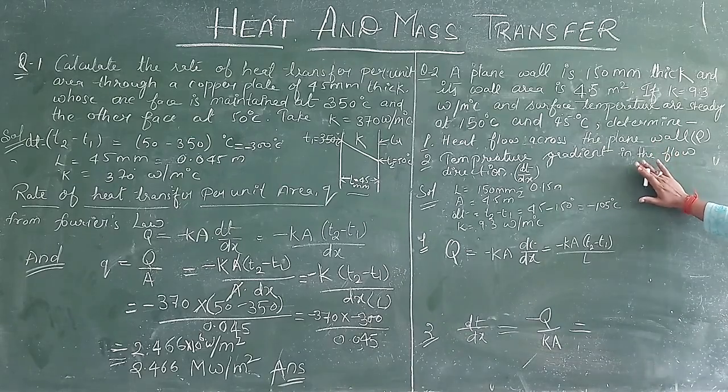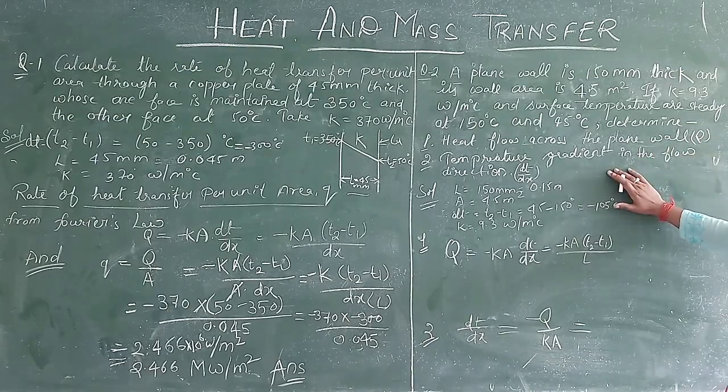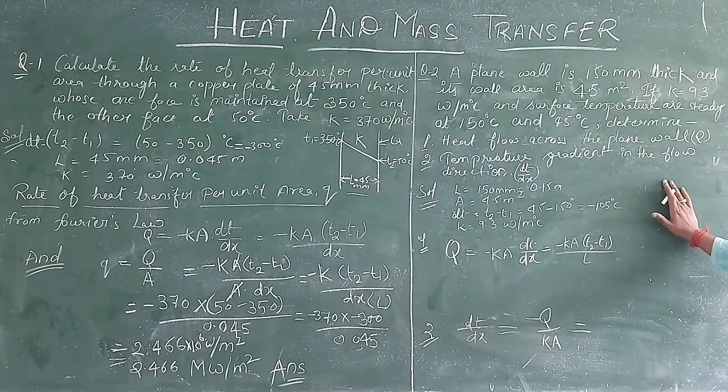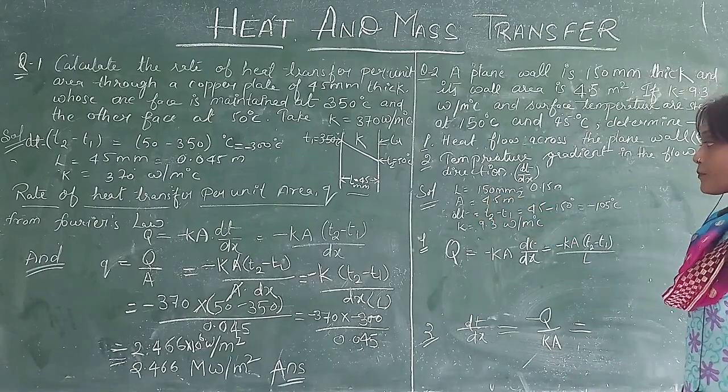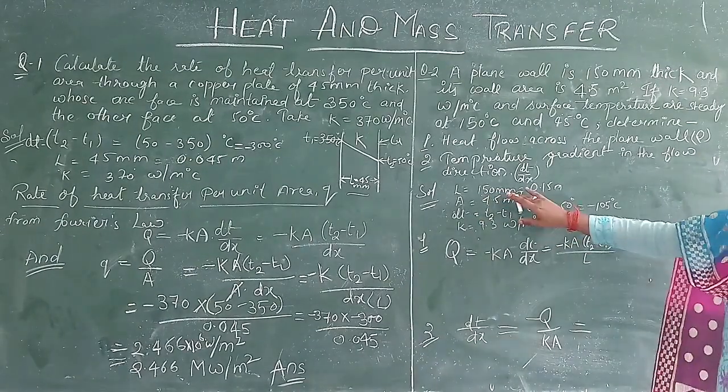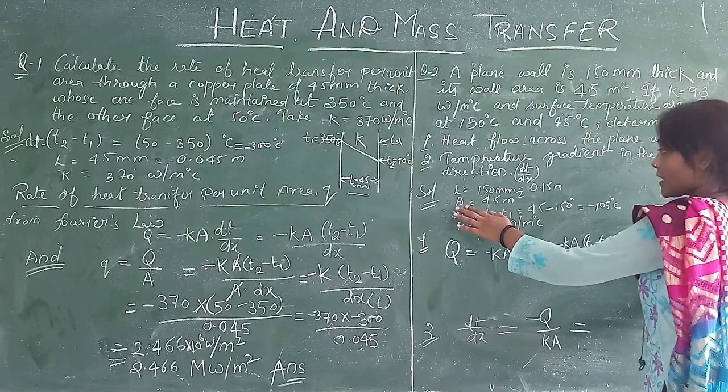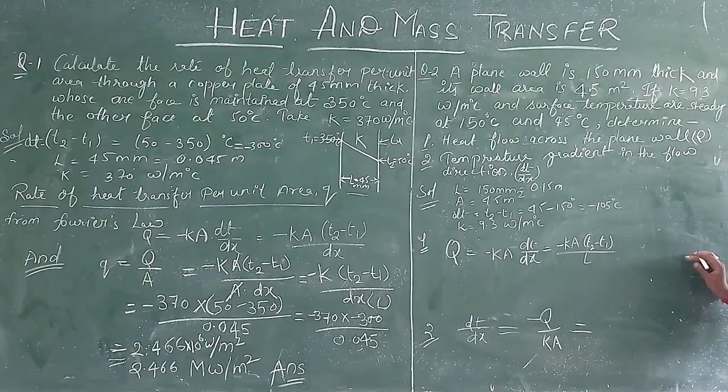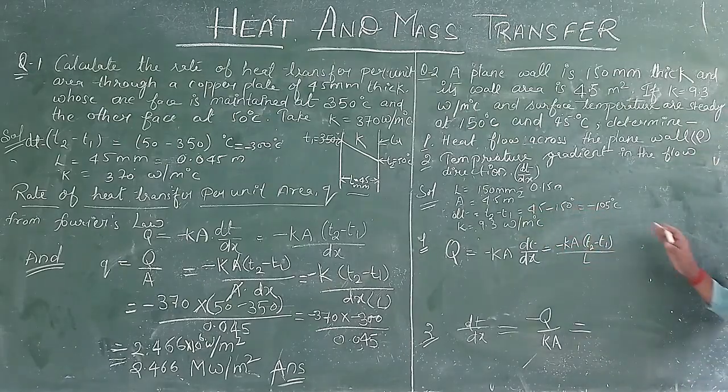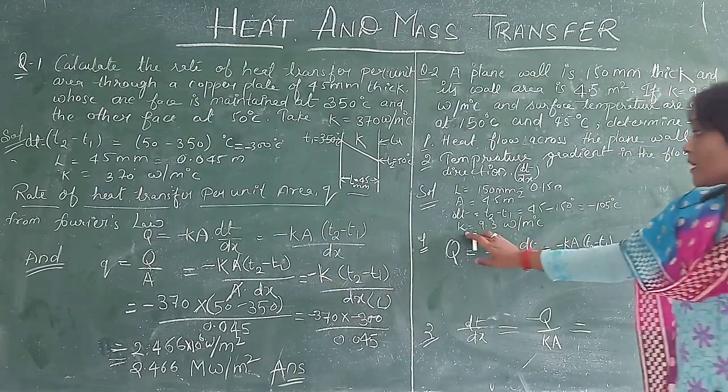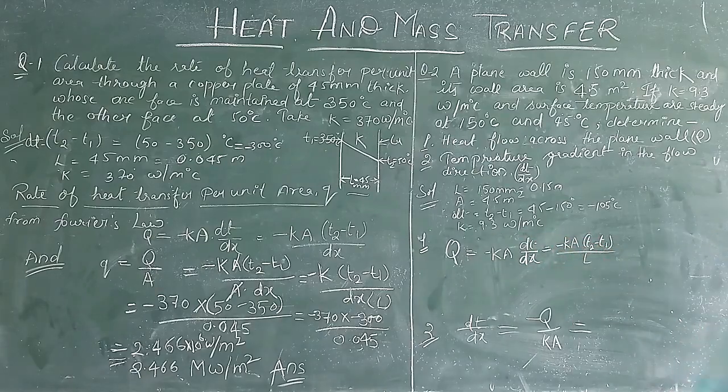Two temperatures are given and we have to find the rate of heat flow through the plane wall and the temperature gradient in the flow direction. Wall thickness is 0.15 meter, area is 4.5 meter square, and dt is T2 minus T1, that is 45 minus 150, which is minus 105 degree centigrade. Thermal conductivity k is 9.3 watt per meter degree centigrade.